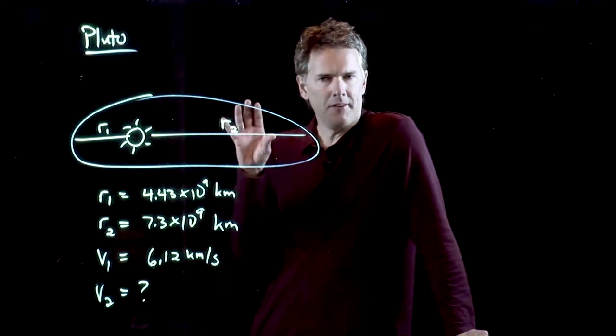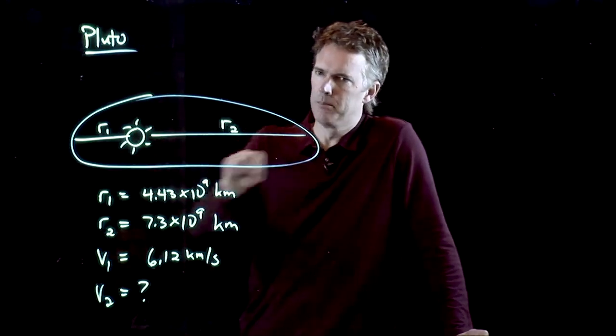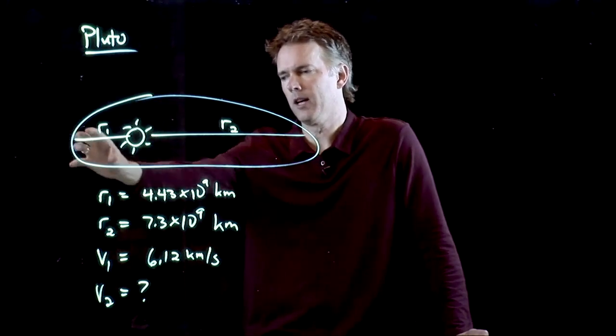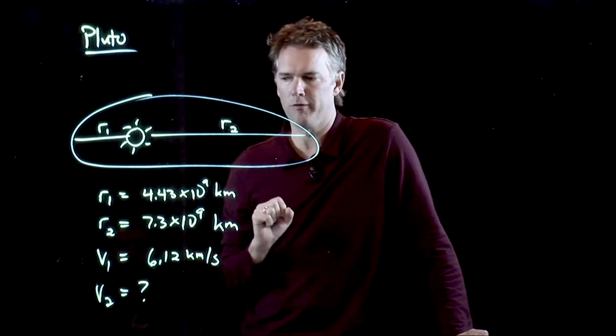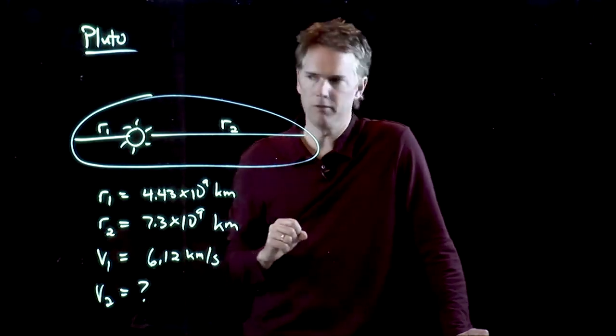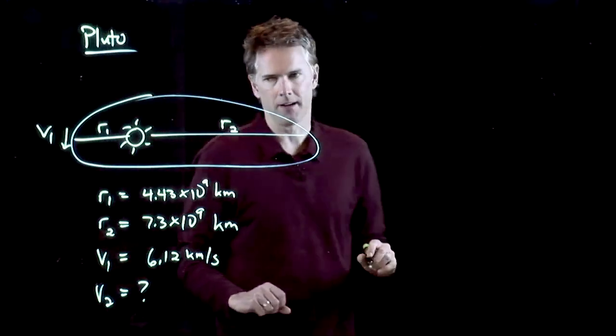Hello class, Professor Anderson here. Let's take a look at Pluto's orbit. Pluto has this very elliptical orbit, and what we know is that at closest approach, it has a distance of 4.43 times 10 to the 9 kilometers, and it's moving at a speed of 6.12 kilometers per second.